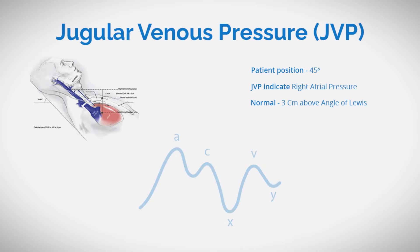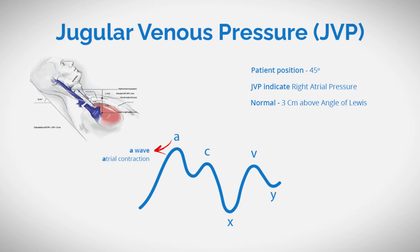Throughout the cardiac cycle, the JVP exhibits distinctive waves. The A-wave, stemming from atrial contraction, propels blood upward into the superior vena cava and the right ventricle.